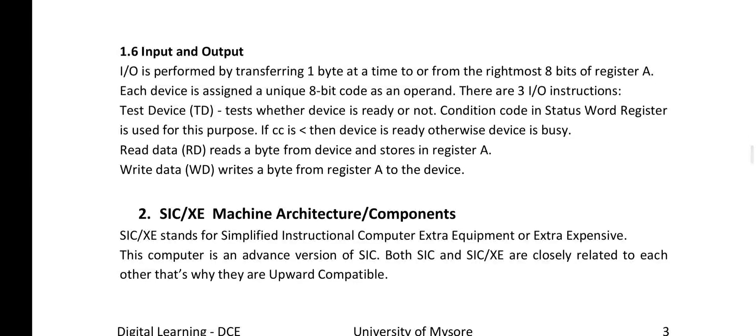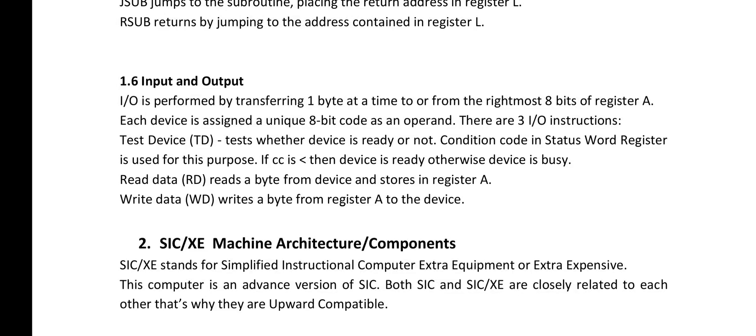The last component of the SIC machine architecture is input/output. I/O operations are performed by transferring 1 byte at a time to or from the rightmost 8 bits of register A. Each device is assigned a unique 8-bit code as an operand. There are 3 I/O instructions: TD (test device) tests whether the device is ready; if CC is less than a threshold, the device is ready, otherwise it is busy. RD (read data) reads a byte from the device and stores it in register A. WD (write data) writes a byte from register A to the device. With this we have learnt the 6 components of SIC architecture.